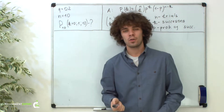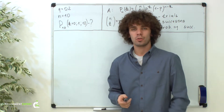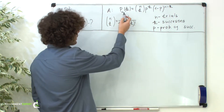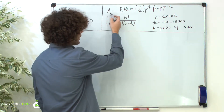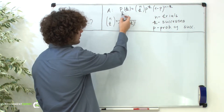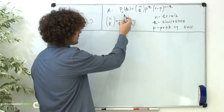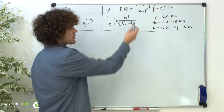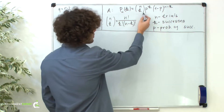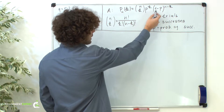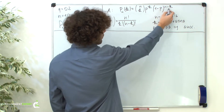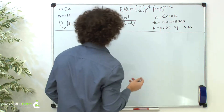First of all, let's recall the Bernoulli formula. The probability that some event A will occur k times in n independent tests equals n choose k, times p raised to the power of k, times 1 minus p raised to the power of n minus k.